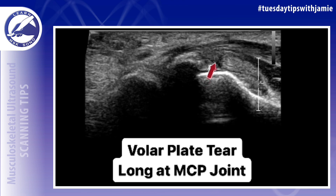On ultrasound, this will appear as small displaced hyperechoic ossification. The volar plate of the PIP joint is most vulnerable to hyperextension injury.